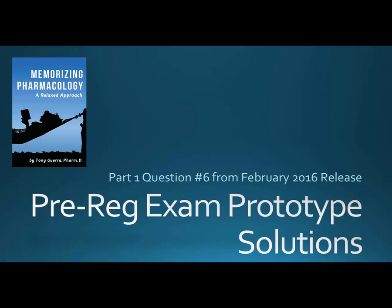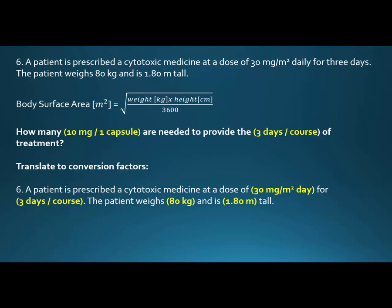This is part one, question number six from the February 2016 release. A patient is prescribed a cytotoxic medicine at a dose of 30 milligrams per meter squared daily for three days. The patient weighs 80 kilos and is 1.8 meters tall. The body surface area equation is given: meters squared equals the square root of weight in kilograms times height in centimeters divided by 3600. I would circle this to remember that I need to convert the height.